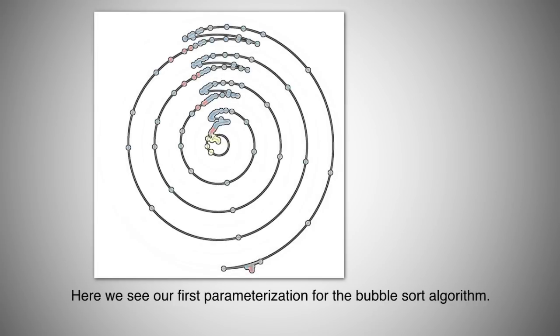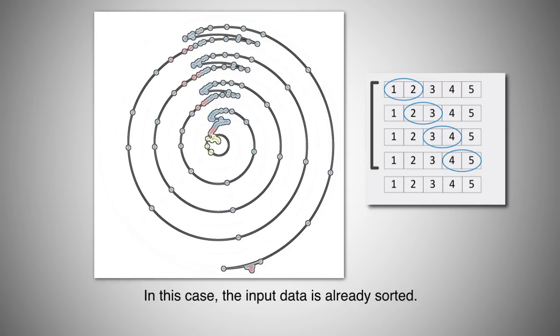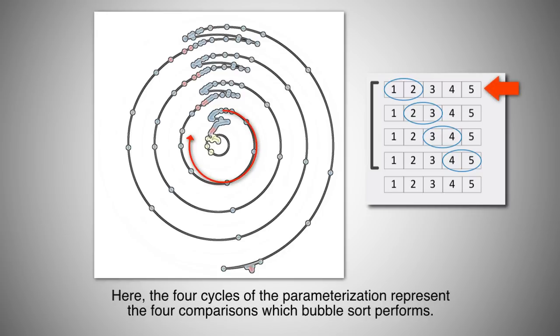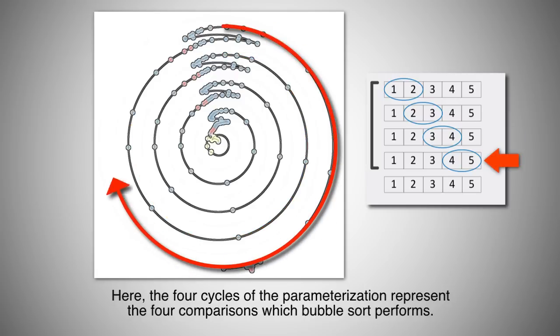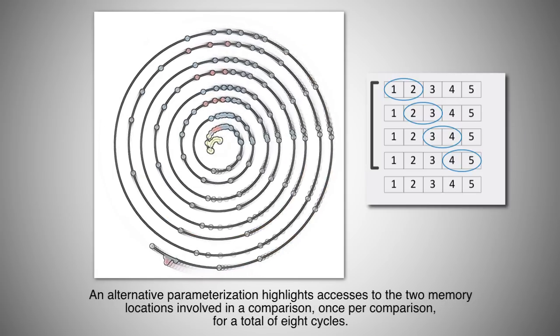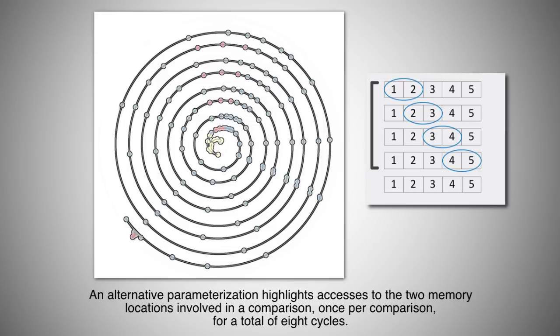Here we see our first parameterization for the bubble sort algorithm. In this case, the input data is already sorted. Here, the four cycles of the parameterization represent the four comparisons which bubble sort performs. An alternative parameterization highlights accesses to the two memory locations involved in a comparison once per comparison for a total of eight cycles.